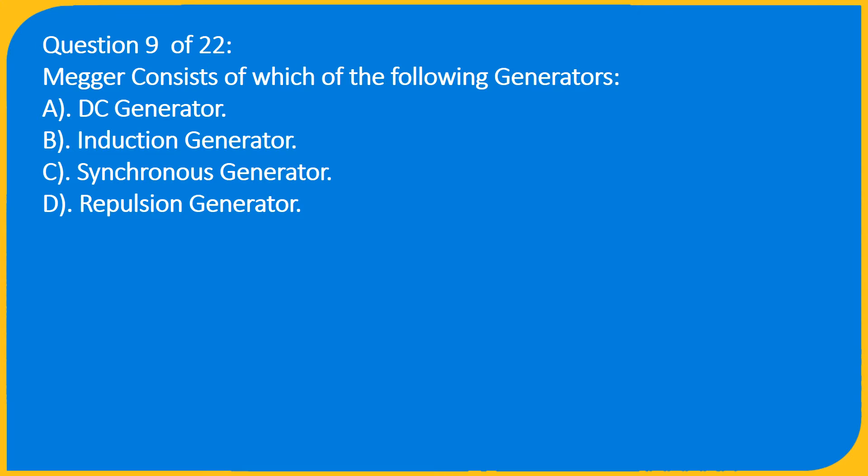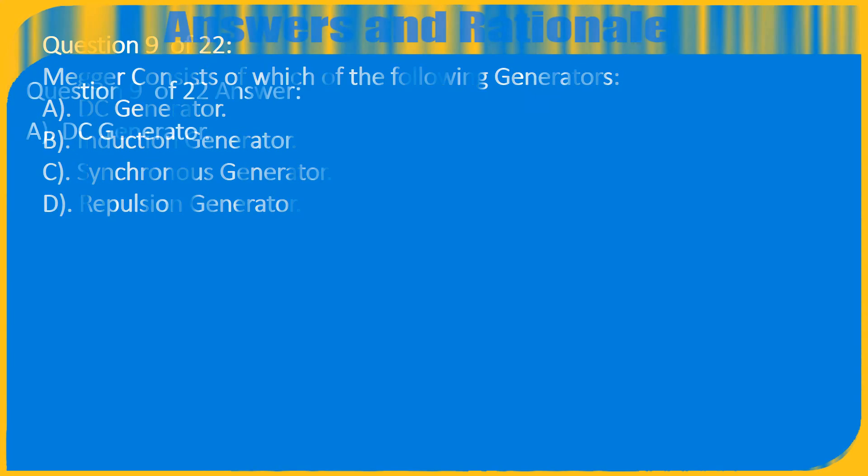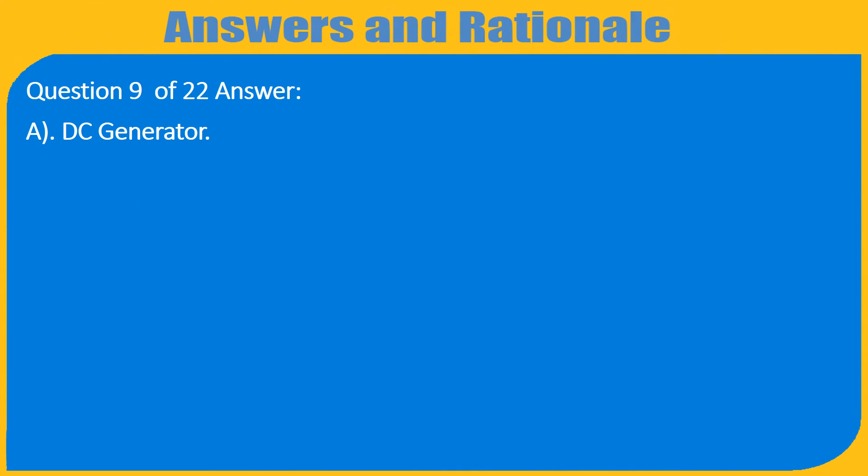Question 9 of 22: A Megger consists of which of the following generators? A. DC generator, B. Induction generator, C. Synchronous generator, D. Repulsion generator. Answer: A. DC generator.